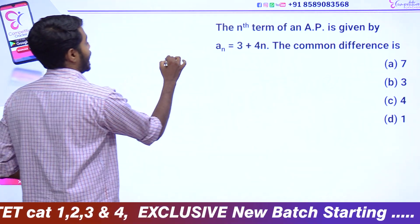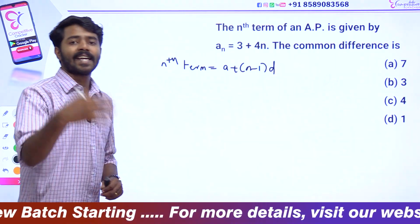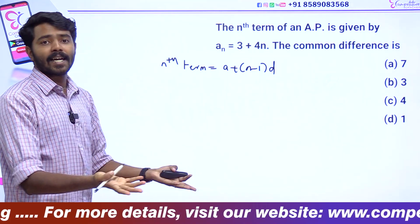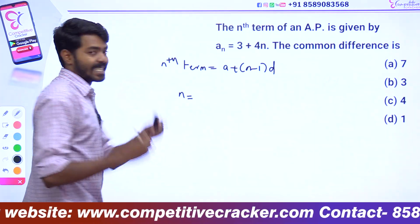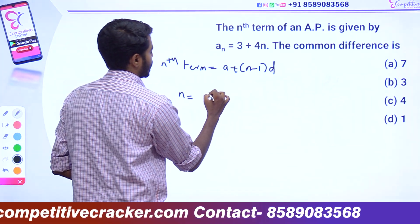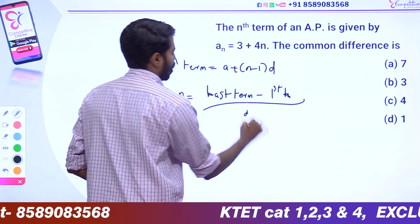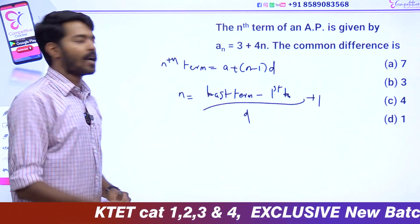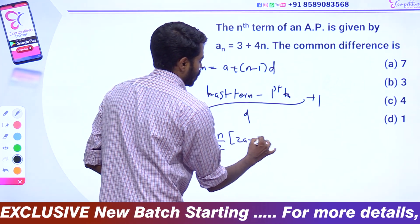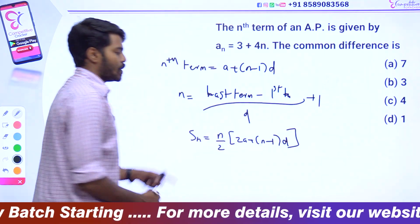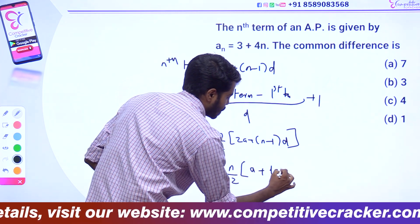The equation is very important: a plus (n minus 1) d equals the nth term. Last term minus first term divided by common difference plus 1 gives the value of n. The sum formula is n by 2 into (2a plus (n minus 1) into d), or equivalently n by 2 into (first term plus last term).